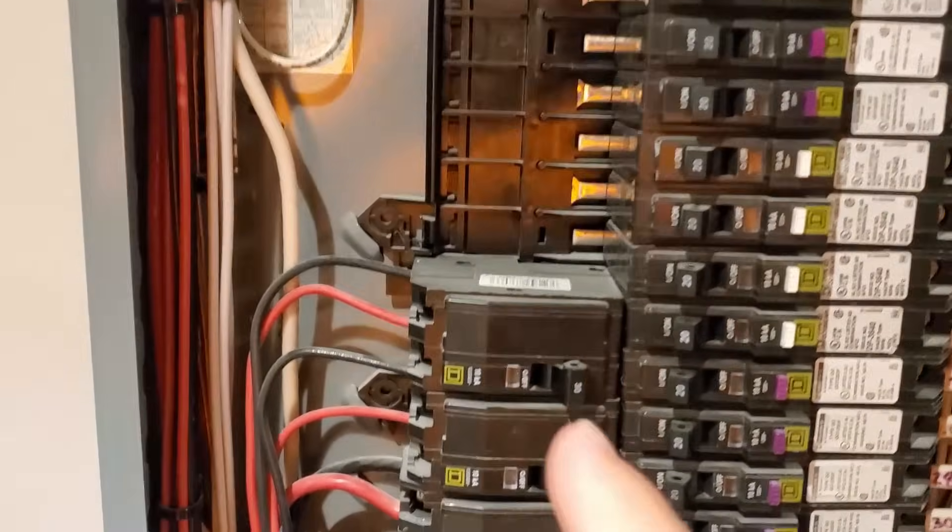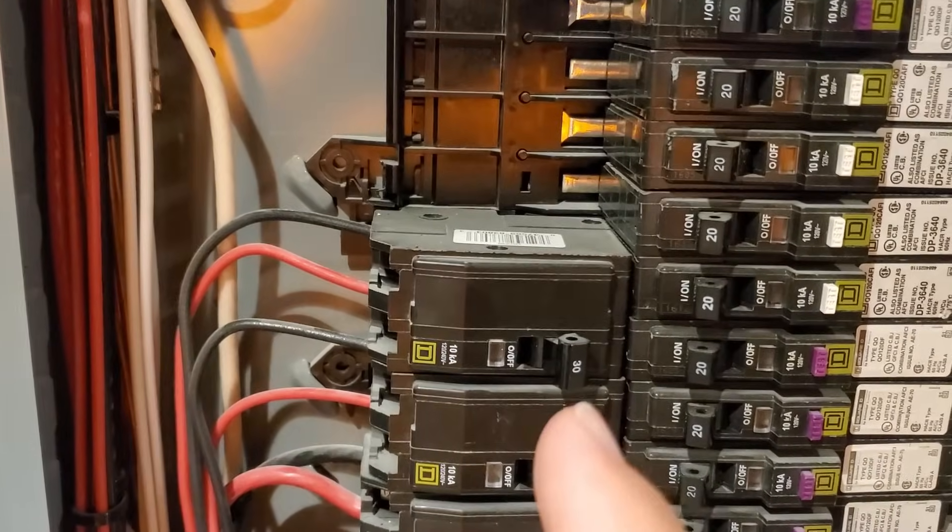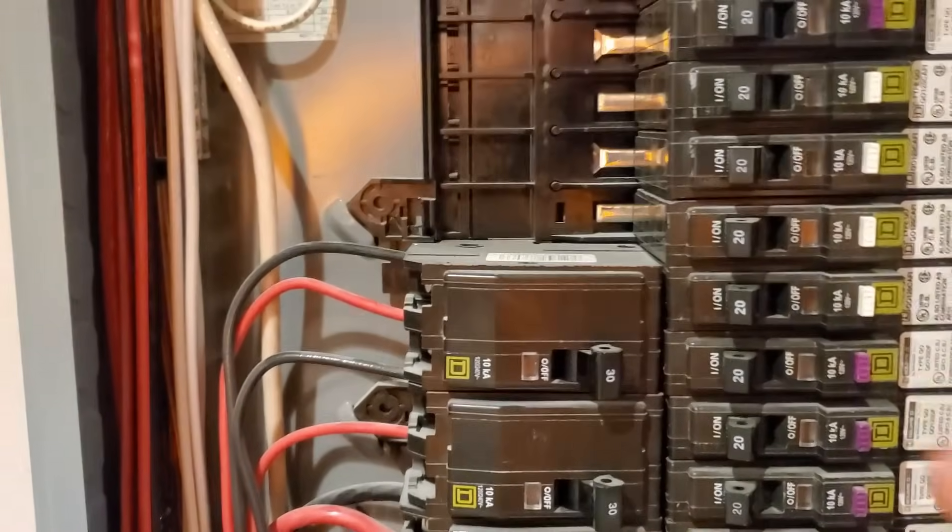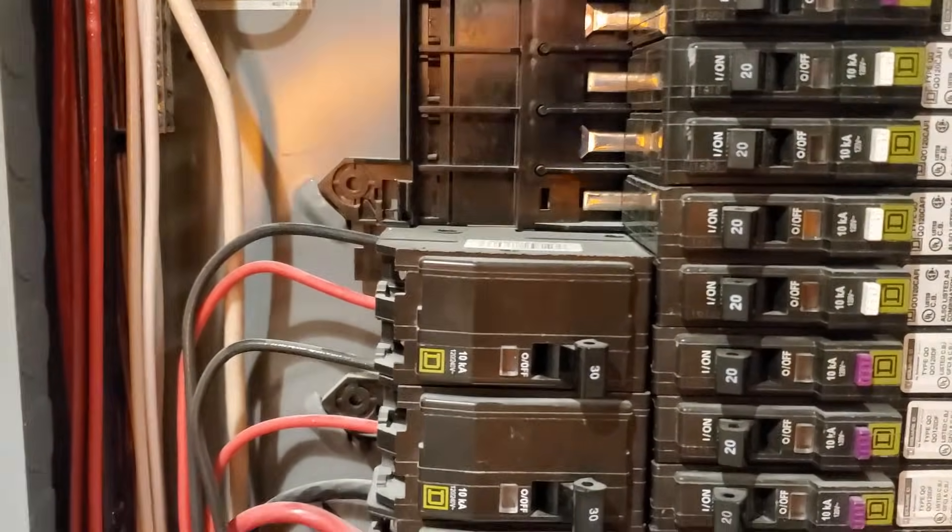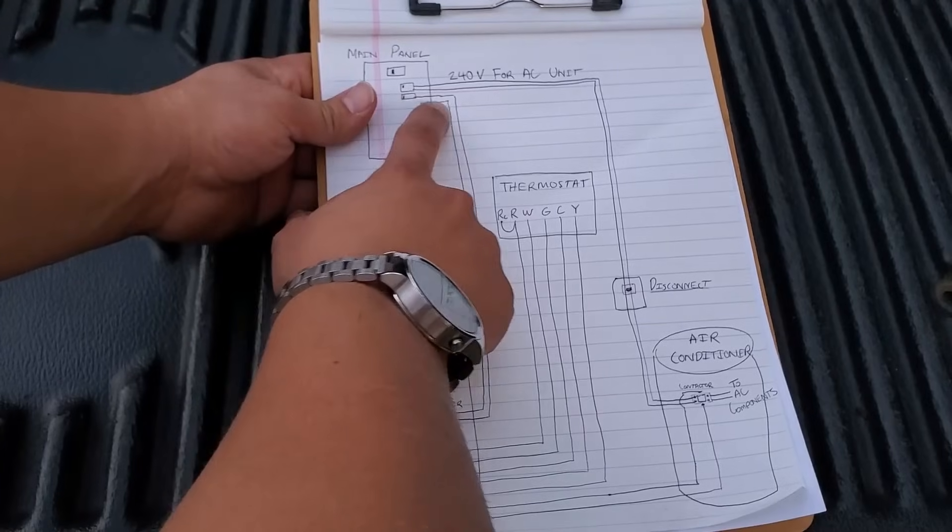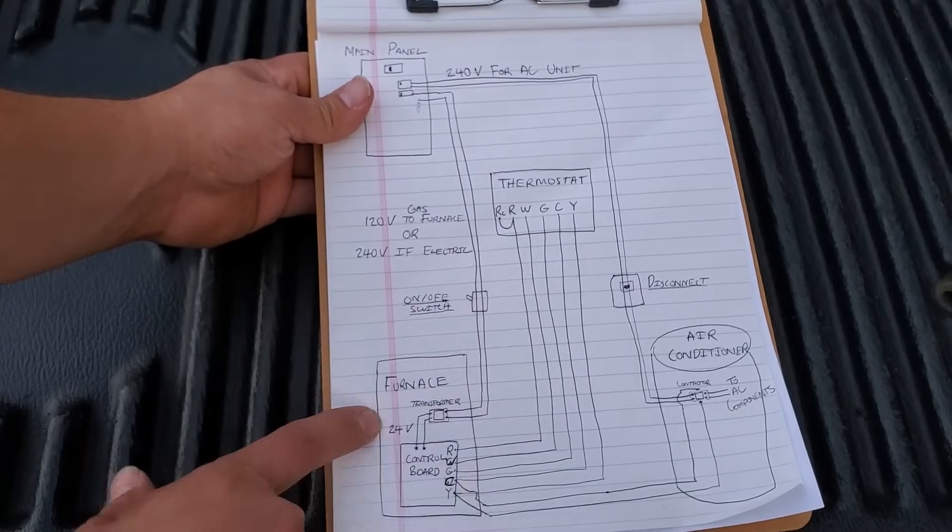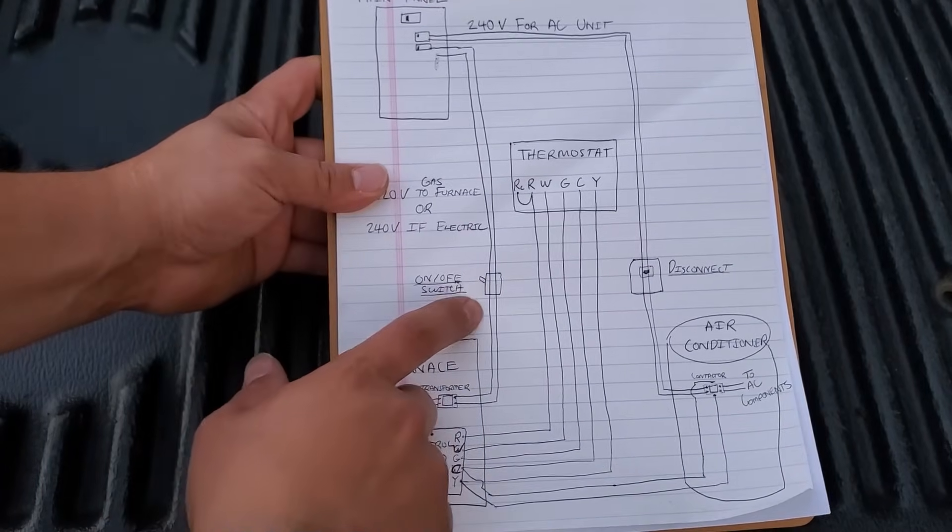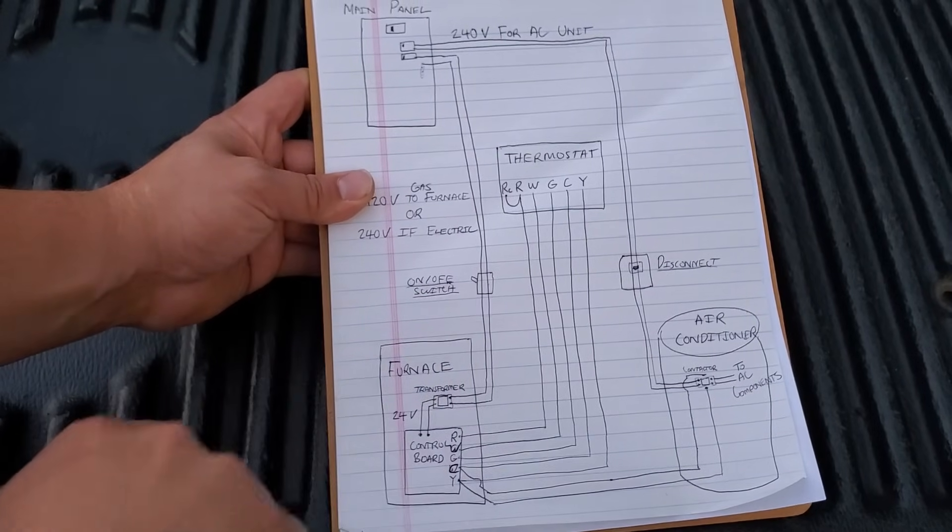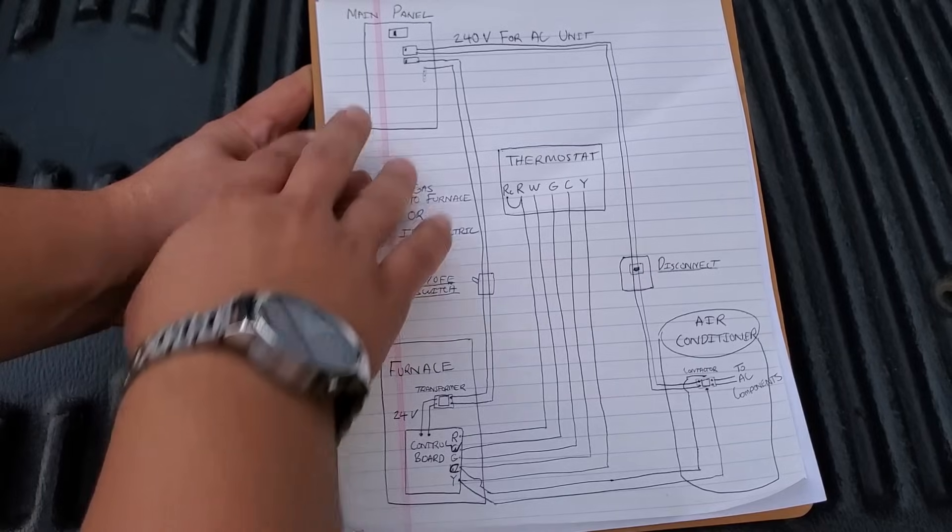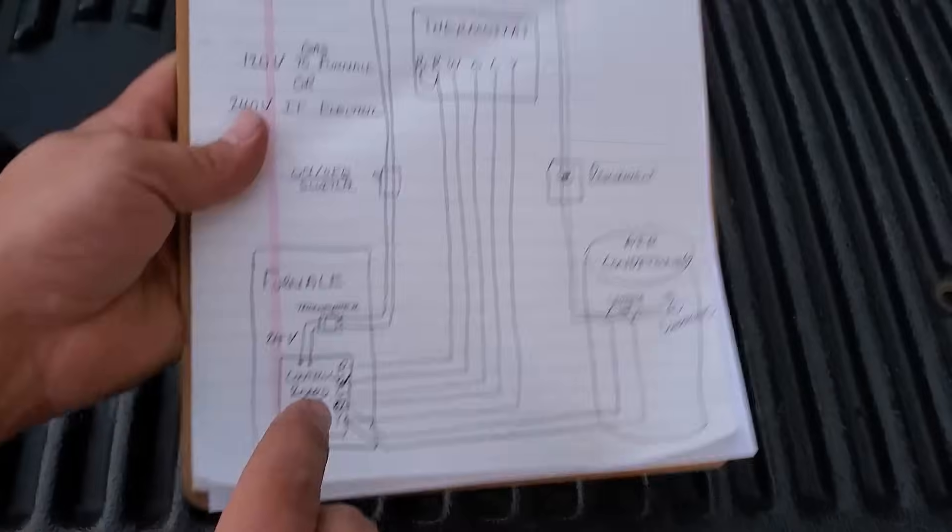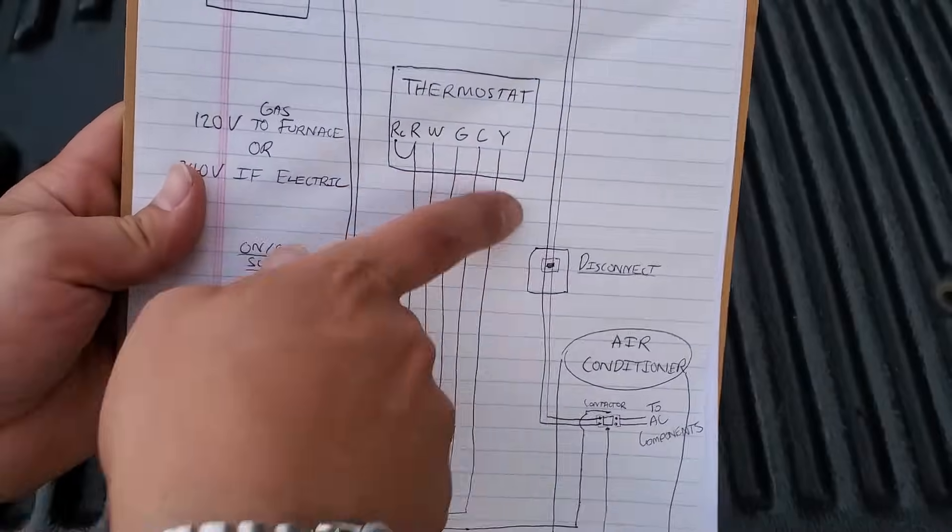Note that if you have an electric furnace or an air handler, a lot of times those are 240 volts, so you would be looking for a double pole breaker in that case feeding your air handler or electric furnace. Here's a 120 volt circuit coming down to the furnace, and a lot of times you'll have just a regular old switch on the side of the furnace that you can turn on or off. Everything really starts at the furnace as far as the control power, which is what we want to talk about mainly, the thermostat wiring.